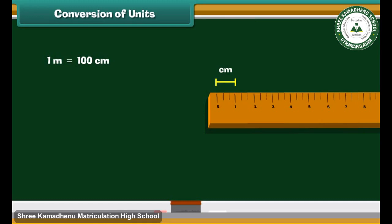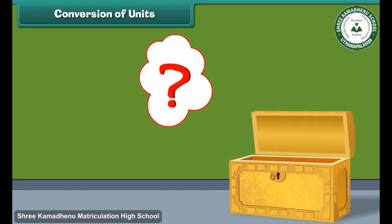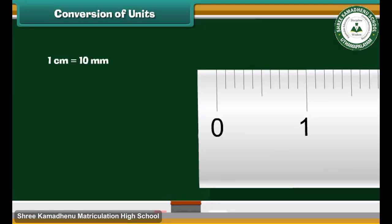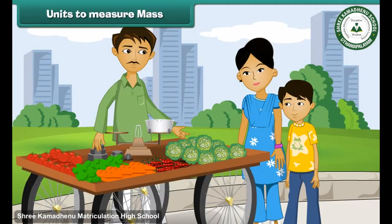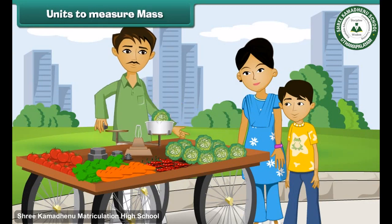Thus, one meter equals 100 centimeters. How will you convert the length of a box given in centimeters into millimeters? When one centimeter is divided into 10 equal parts, then each of these parts is called a millimeter. This means one centimeter is equal to 10 millimeters. You might have gone along with your mother for buying vegetables — 1 kilogram cabbage, 5 kilograms potatoes, 100 grams green chili, etc., to the vegetable seller.